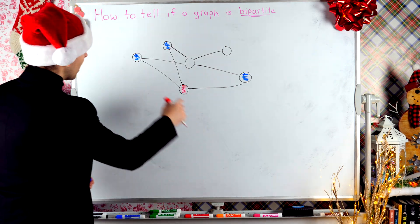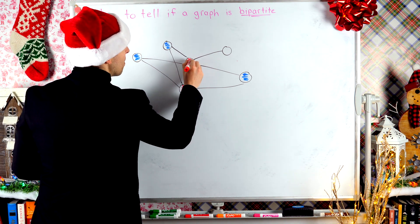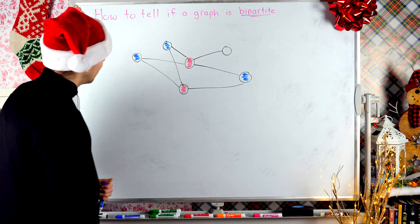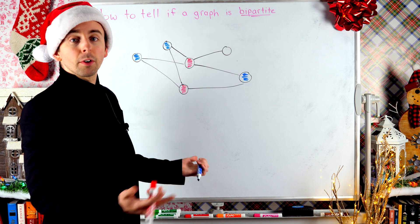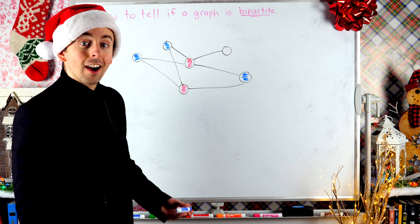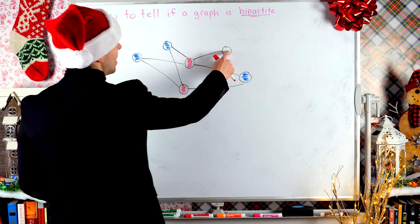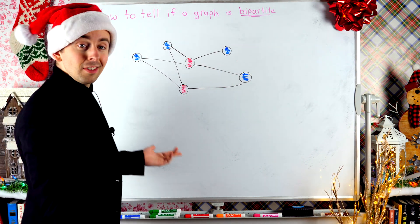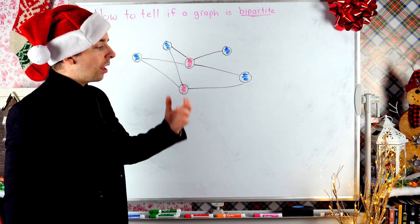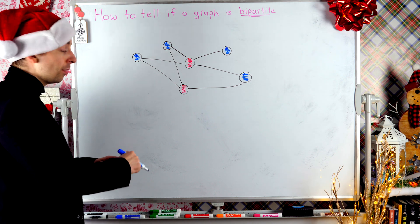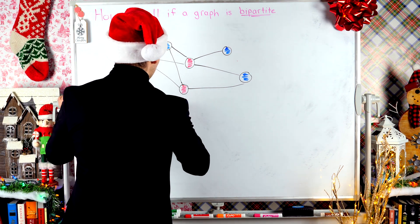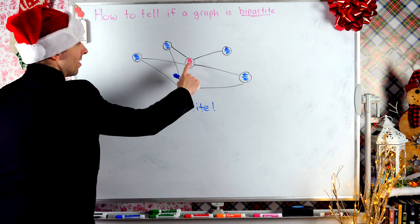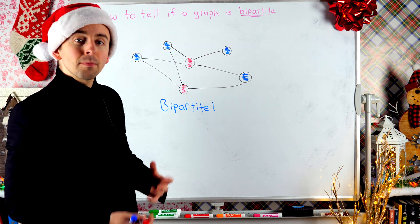Since that vertex is red, its neighbors have to be a different color — blue. This is a neighbor, so it gets blue. This is a neighbor, so it gets blue. This is a neighbor, so it gets blue too. Now I do the same process with newly colored vertices. This blue vertex's neighbors have to be red. This one's already red; this other neighbor I'll make red now. I'm keeping my eye out for any adjacent vertices with the same color — I don't see any yet, so I'll keep going.